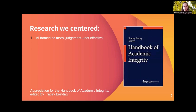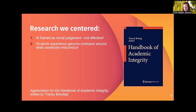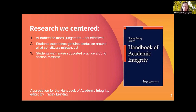We were able to ascertain some patterns between the different chapters and research contributors. One pattern that really stood out was that academic integrity has traditionally been framed as a moral judgment — you do it and you're bad, don't do it so you can be good — and that for students was not effective. We also heard that students increasingly experience genuine confusion around what constitutes misconduct, in part because of the rise in active learning where students aren't yet able to ascertain whether something is collaborative or would be seen as collusion.